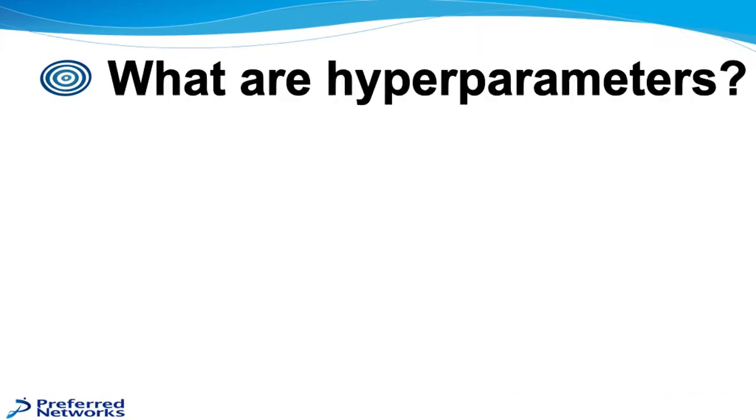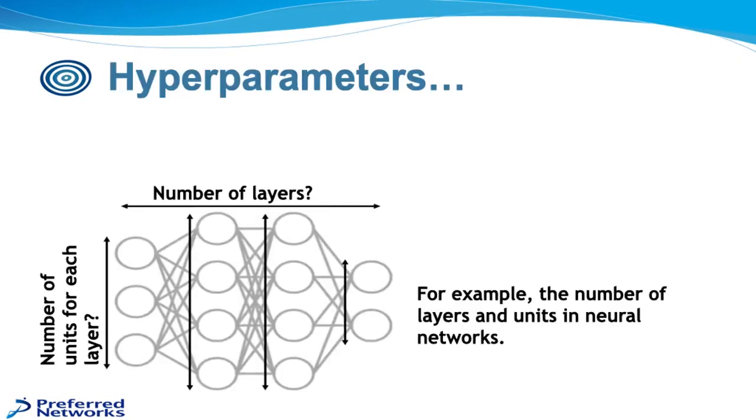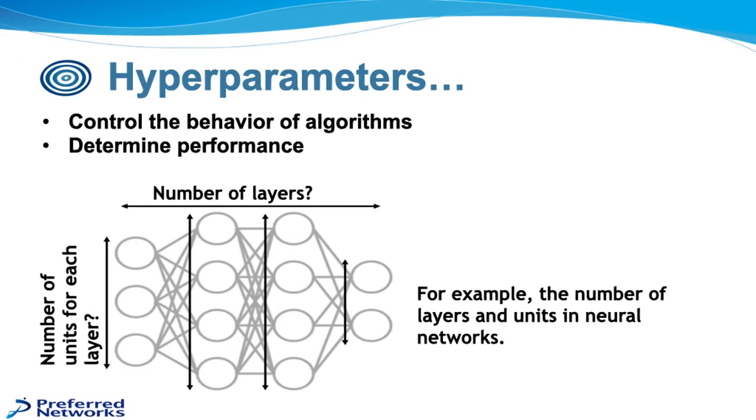So let's go ahead and jump in and talk about what are hyperparameters. So hyperparameters, they basically control the behavior of the algorithms. They largely determine the performance, how well or badly the algorithms perform, and they're typically set manually. I think there's been a recent study that showed that about 80% of people using deep learning frameworks actually would just be manually setting the hyperparameters. And in this example below in the diagram, we can see that there's the number of layers that are used in a neural network, how many units are in each layer, are both good examples of hyperparameters.